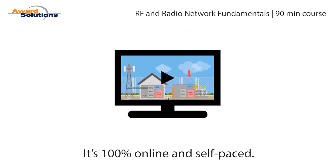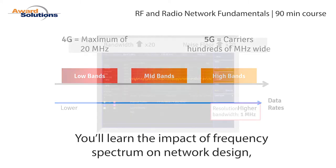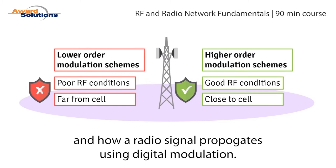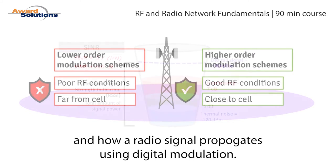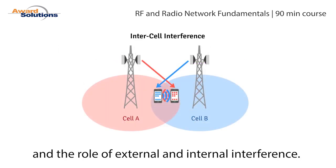It's 100% online and self-paced. You'll learn the impact of frequency spectrum on network design, bandwidth considerations, and how a radio signal propagates using digital modulation. You'll also learn key RF measurements like SINR and the role of external and internal interference.